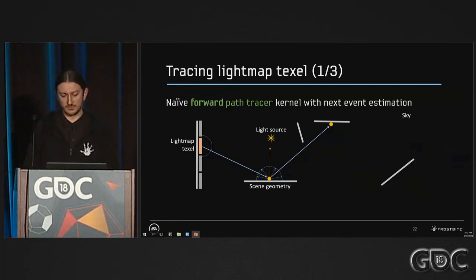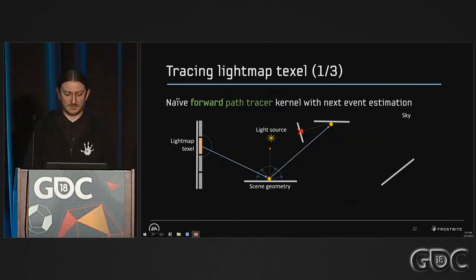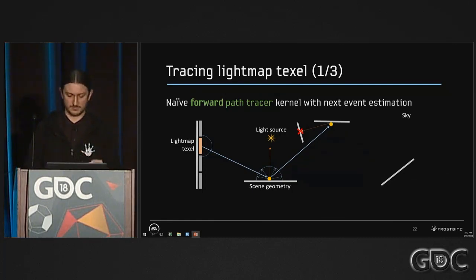For that new vertex on the path, we can cast another ray to test visibility. If it's not visible, we will not accumulate that light source. We do that for all light sources, and we have an acceleration structure — though I won't describe it in this talk. We continue for N vertices on the path.